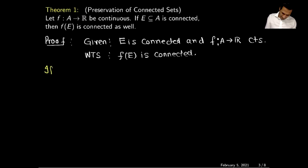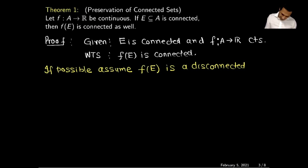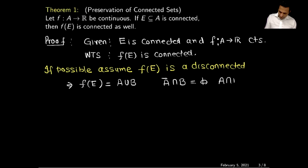If possible, assume f(E) is not connected — that is, assume f(E) is a disconnected set. If f(E) is disconnected, then by definition I can write f(E) as a union of two sets A and B, such that the closure of A does not intersect B, and A does not intersect the closure of B.